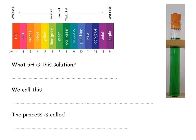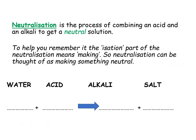Okay, hopefully you've filled this in — if you make any corrections, remember it's in a different coloured pen. So what pH is this solution? It's 7, it's green, so it should be 7. We call this neutral. And the process is called neutralisation — making something neutral. Neutralisation is the process of combining an acid and an alkali to get a neutral solution. The '-isation' part of neutralisation means 'making', so neutralisation can be thought of as making something neutral.